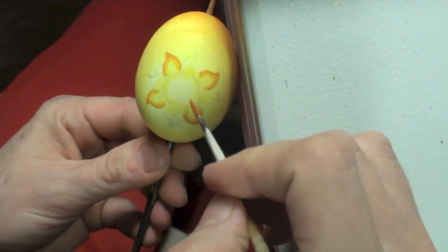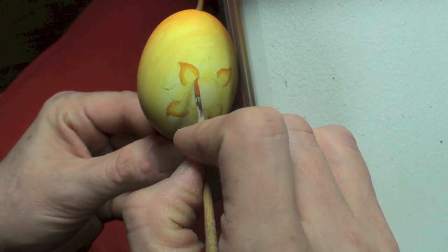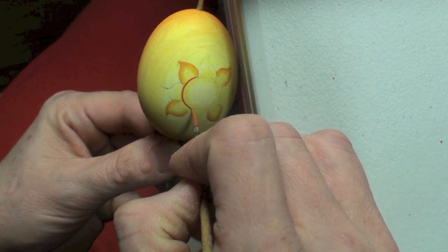Once this layer has dried, we want to take a fine liner brush and just outline the surface of the sun with a dark orange color.